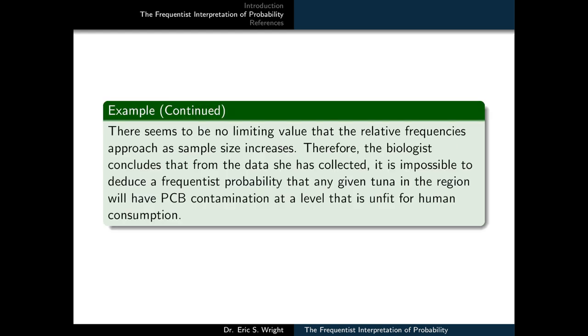That's precisely the conclusion arrived at by the fisheries biologist. There seems to be no limiting value that the relative frequencies approach as the sample size increases. Therefore, the biologist concludes that from the data she collected, it is impossible to deduce a frequentist probability that any given tuna in the region will have PCB contamination at a level that is unfit for human consumption.